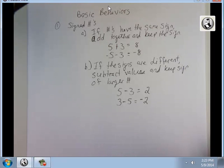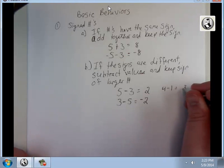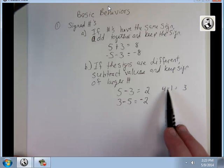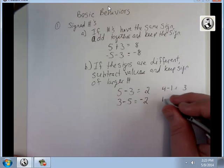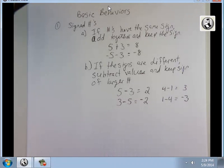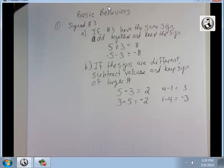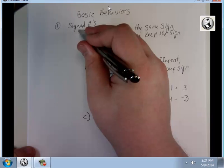One more set of examples. 4 minus 1 is going to be positive 3. Different signs, 4 is positive, 1 is negative. 4 is greater than 1, so I go with the sign on the 4. But if I switched it, I'm going to get negative 3. The 4 is now negative. 4 is still greater than 1. The 4 is negative, so I go with the sign on the 4. So both of these up here were for adding and subtracting.